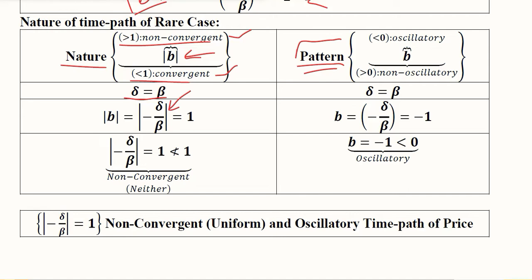Now its comparison is to be done with the value of 1. It is not less than 1, it is equal to 1, so we have neither convergent nor divergent because it is exactly equal to 1, so we can say it is neither.